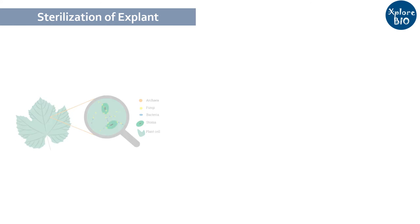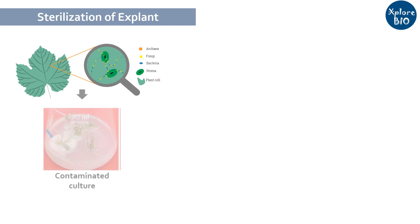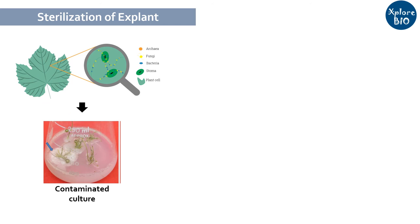Moving on to the second part of the video — surface sterilization of explant and methods. Different types of microbes, pests, and insects consider plants as their living place. So for in vitro propagation of plants, the first and foremost step is removal of dust and microbes from the surface of the explant, which otherwise may lead to contamination and tissue culture failure.